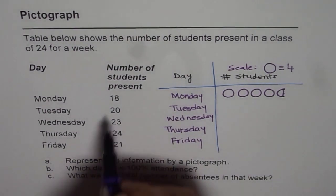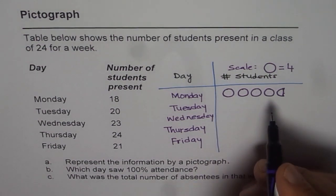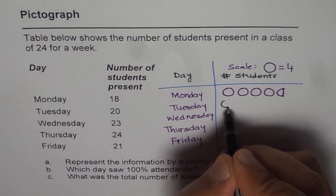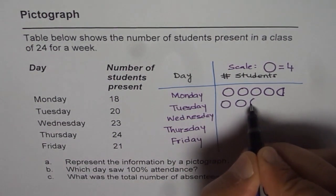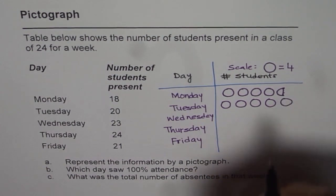Now on Tuesday there are 20 students. 20 means 4 times 5. So 4 times 5 is a whole number, so we will have 5 circles. Let me draw 5 circles: 1, 2, 3, 4 and 5.